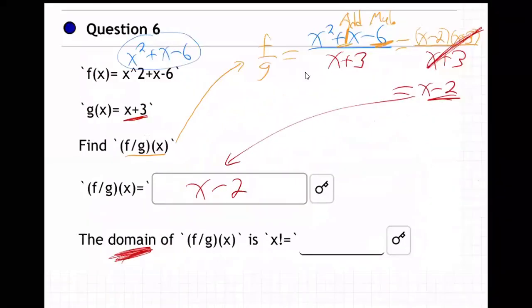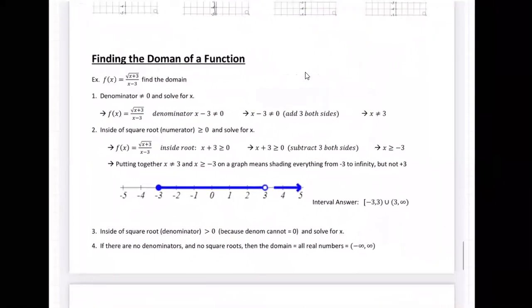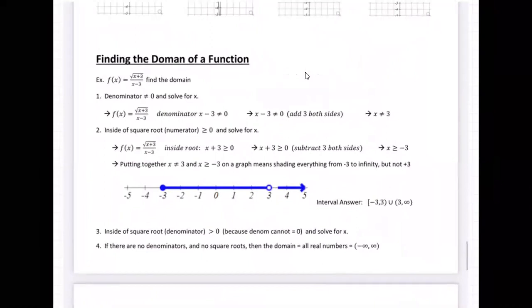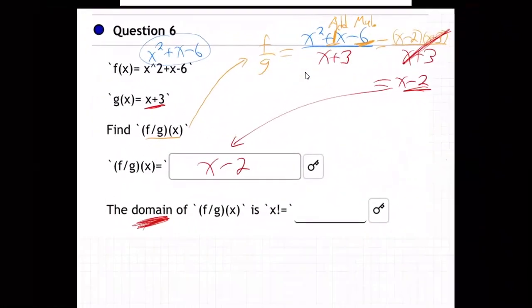So there it is. Okay, so finding the domain of a function, what do you do? Denominator not equal to zero and solve for x. So we've got to go back here, and now you might say, 'Wait, but it canceled. It's just x - 2. There's no more denominator.'